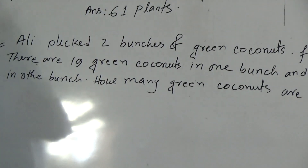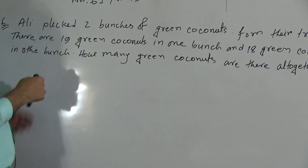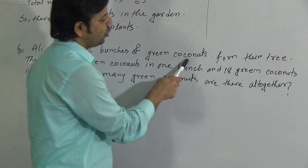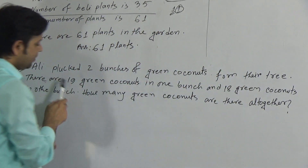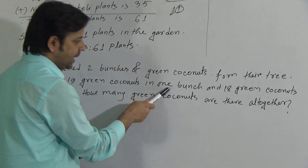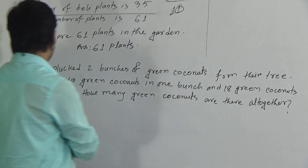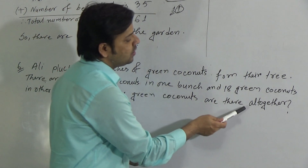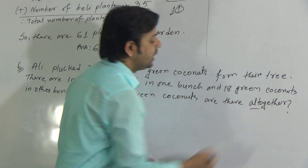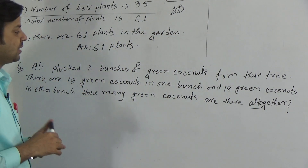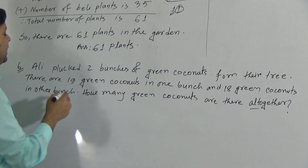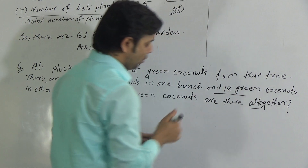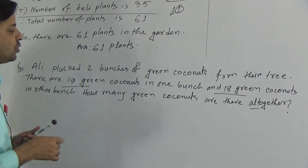Now question 6 — this is also another word problem. Ali plucked 2 bunches of green coconuts from their tree. There are 19 green coconuts in one bunch and 18 green coconuts in the other bunch. How many green coconuts are there altogether? As the word is 'altogether', we have to determine the total number of green coconuts. In one bunch there are 19 coconuts, in another bunch there are 18 coconuts. So we have to add these two to get the total.